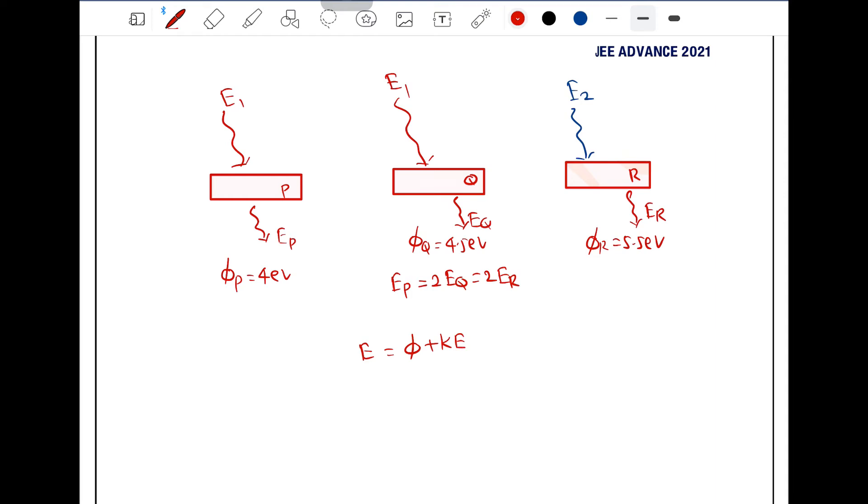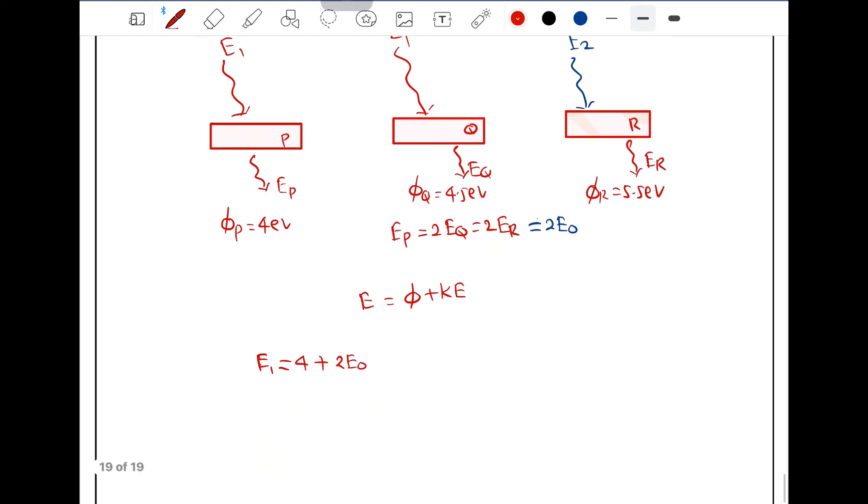So in case of metal P, we can write E1 is equal to work function is 4 plus kinetic energy is EP. Now let's say I am assuming that this EP is equal to 2EQ is equal to 2ER is equal to 2E0. Let's assume. So this will be equal to 2E0. Equation number 1.